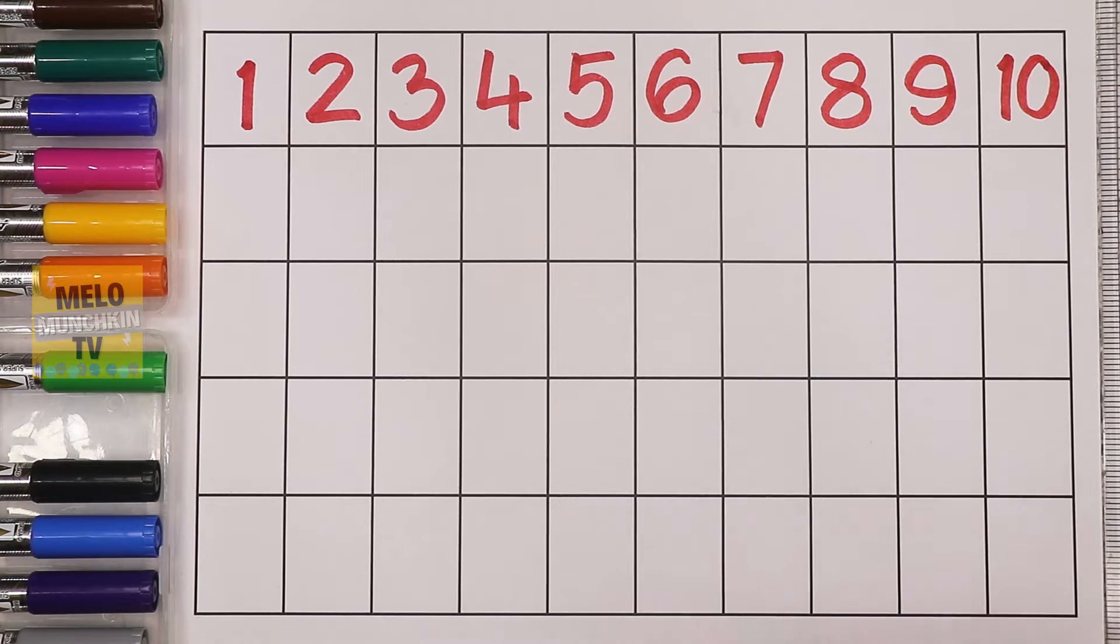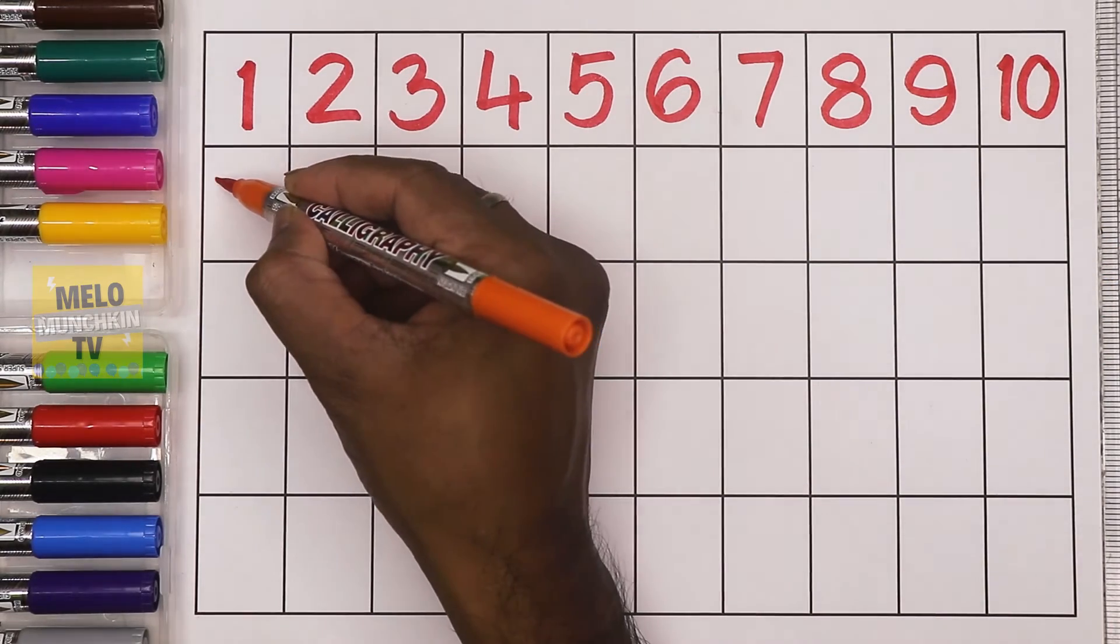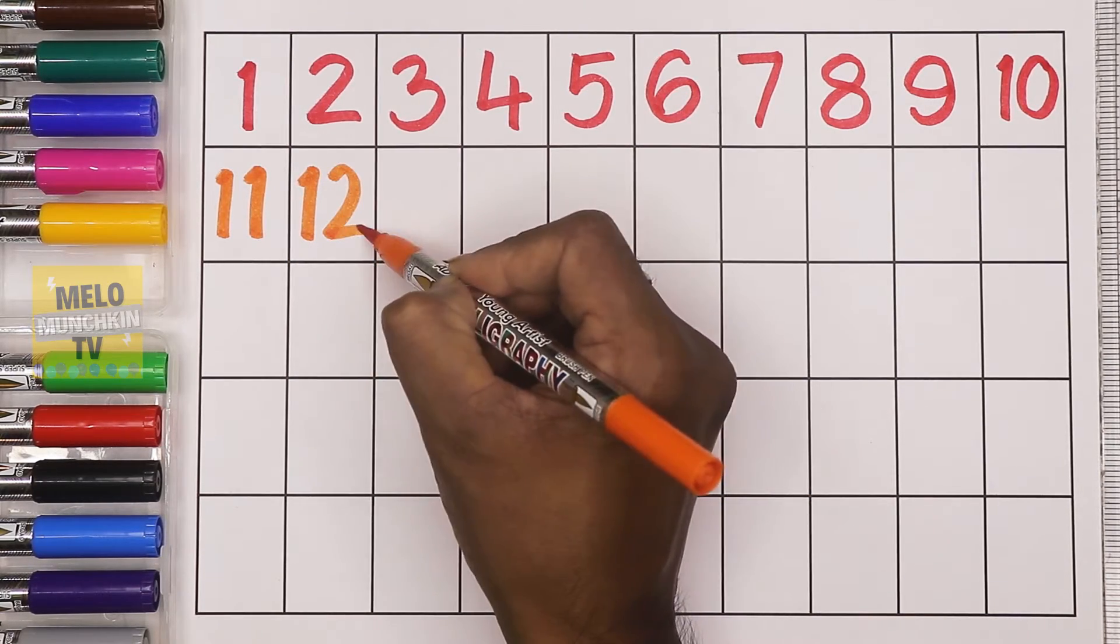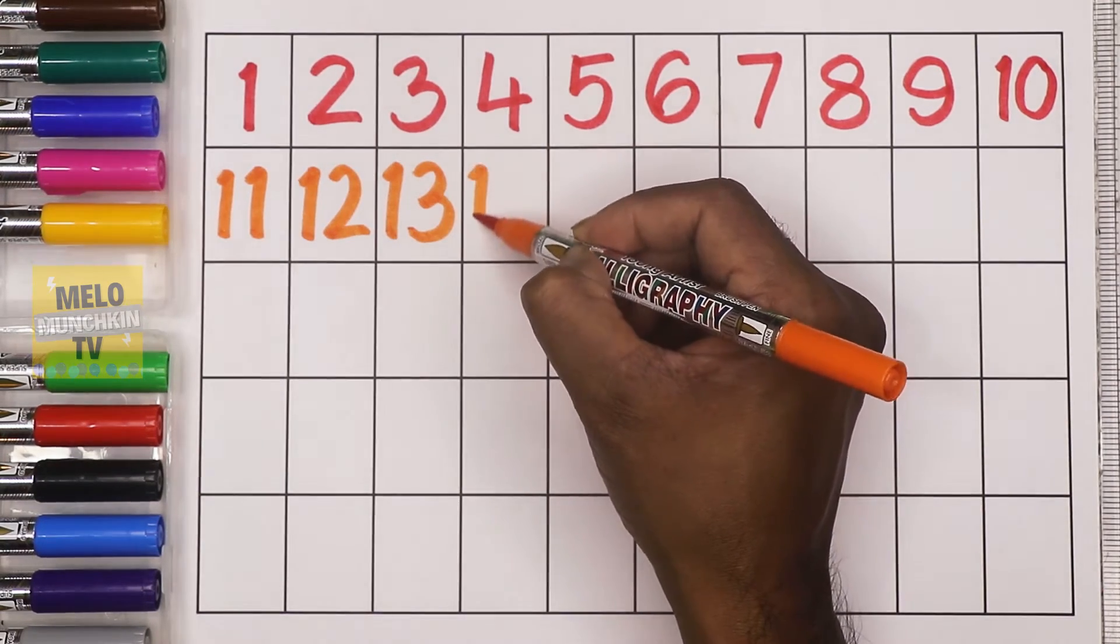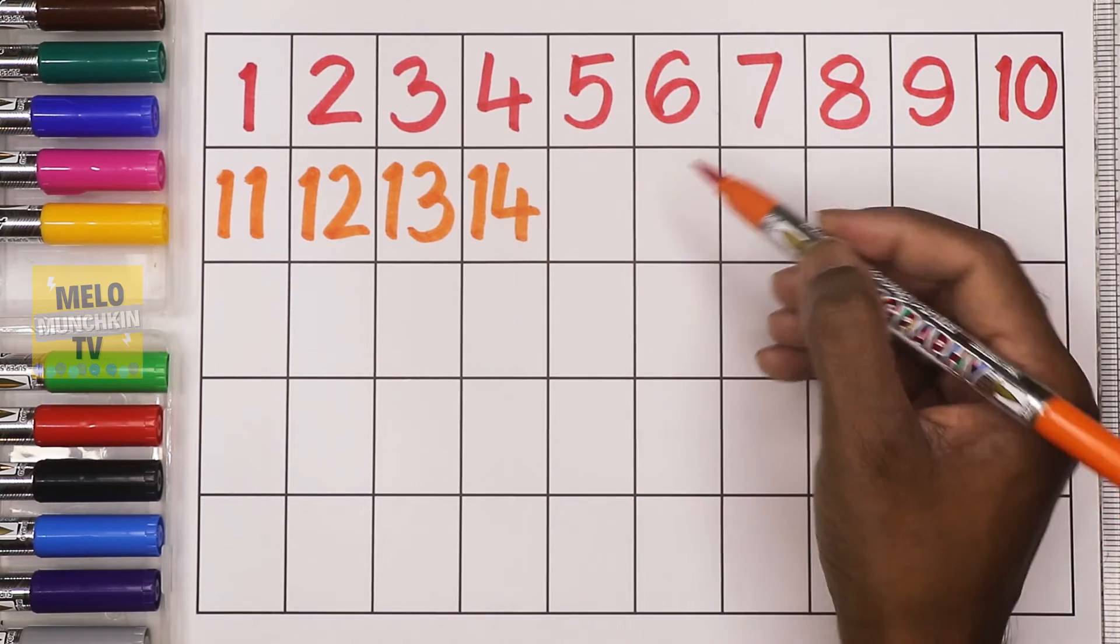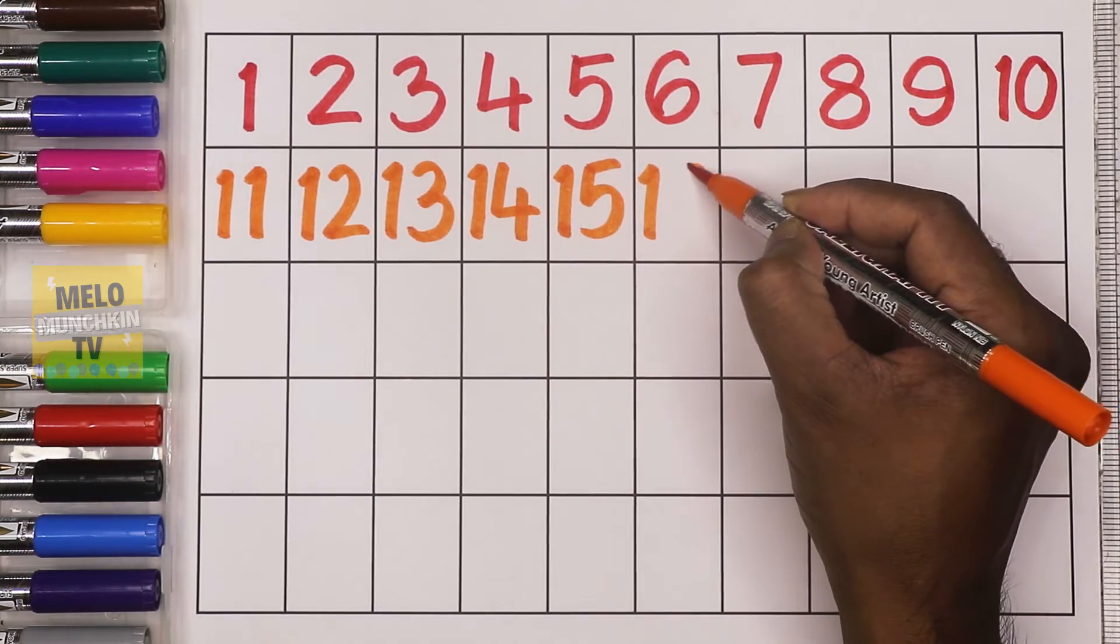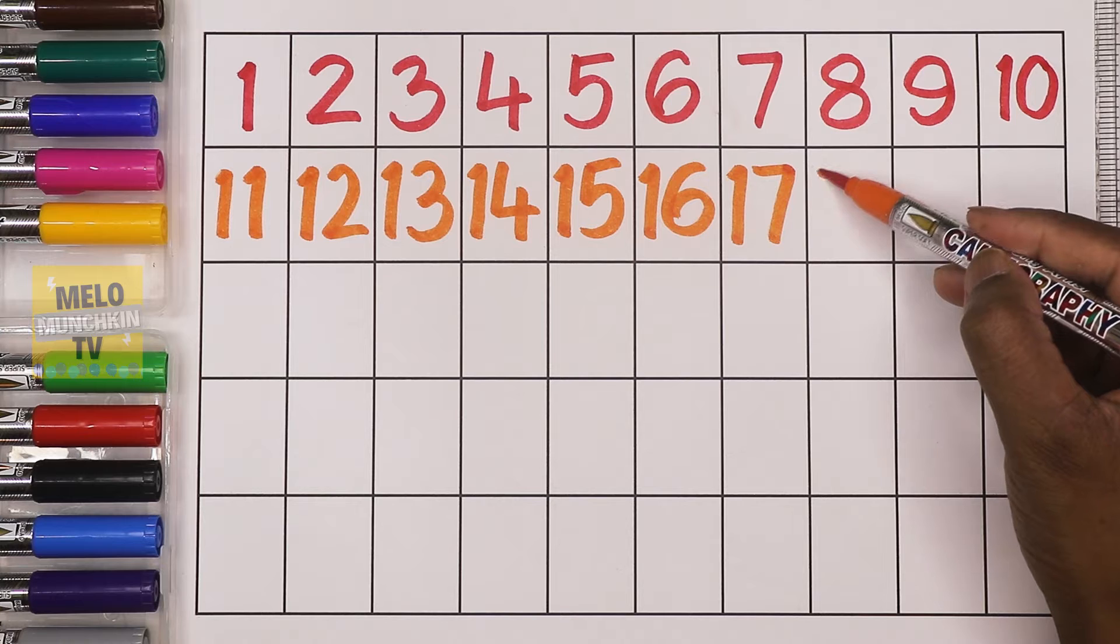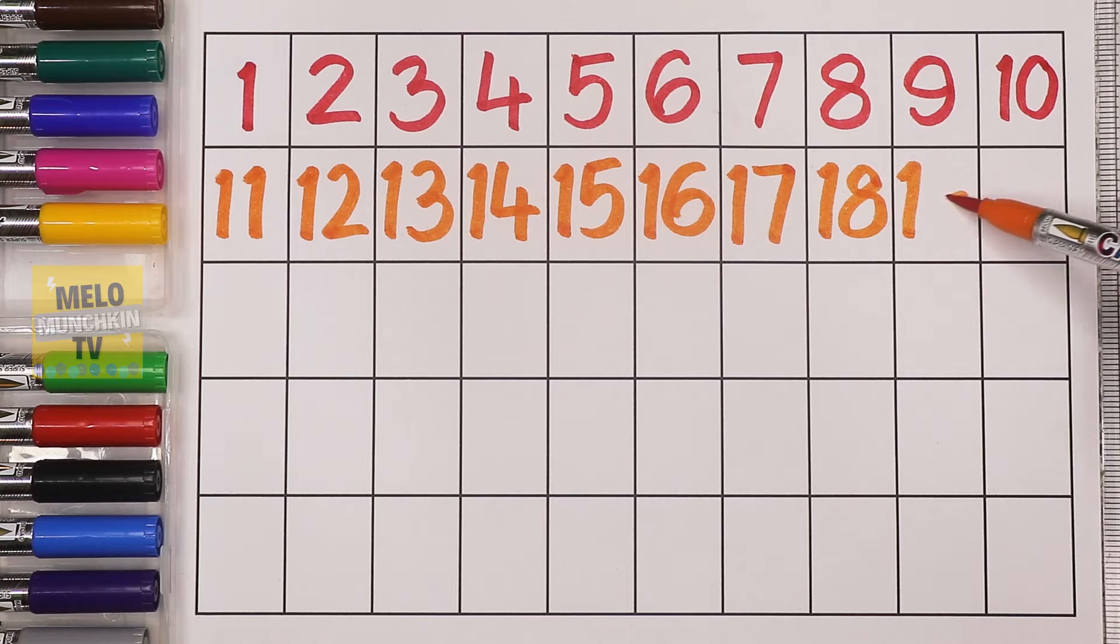10. Now I'll take orange color. This is orange color. After 10: 1-1, 11; 1-2, 12; 1-3, 13; 1-4, 14; 1-5, 15; 1-6, 16; 1-7, 17; 1-8, 18; 1-9, 19.